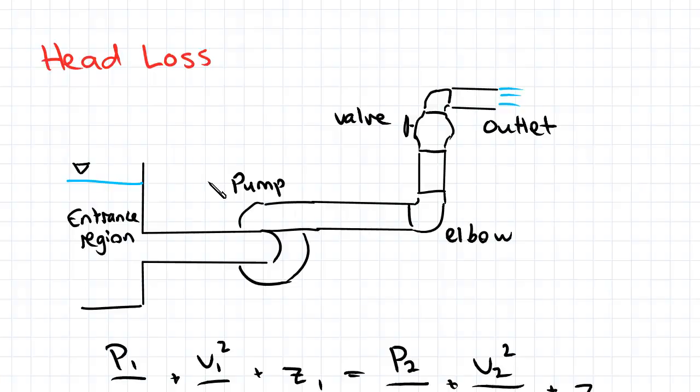There were things like the pipe itself that caused losses, entrance regions disturbed the flow, elbows, joints, and pumps. The main effect these things have is that they do introduce losses, and in particular head losses.